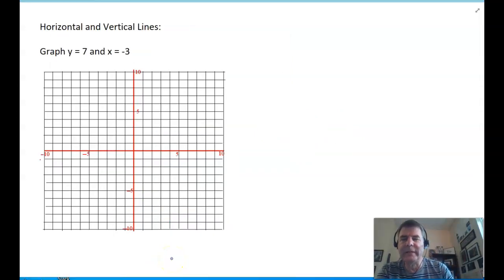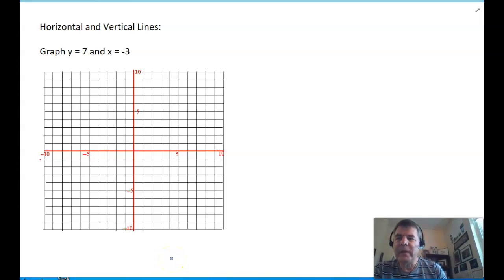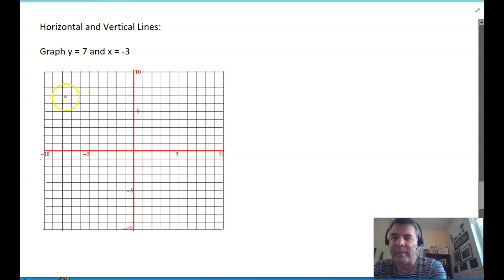Horizontal and vertical lines are special cases. If we're supposed to graph y equals 7, that means y is always 7, regardless of the value of x. So, if x is negative, y is 7. If x is positive, y is still 7. And so, no matter what x is, y is 7.